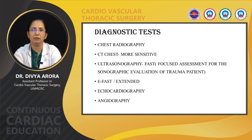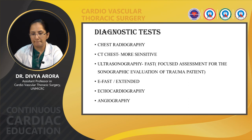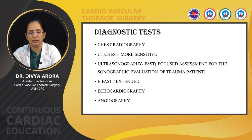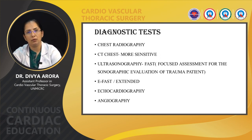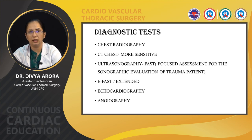CT chest is comparatively more sensitive. Ultrasonography is used in FAST — focused assessment with sonography for trauma — in which we mainly look at the right upper quadrant, left upper quadrant, pelvis, and subxiphoid. Extended FAST also focuses on the right and left hemithoraces. Echocardiography helps in assessing cardiac status. Angiography is indicated in patients with high-speed deceleration injury, upper extremity hypertension, unexplained hypertension, pulse deficits, or systolic murmur.